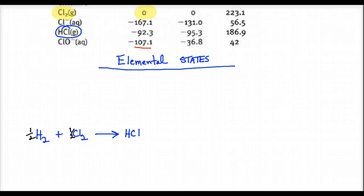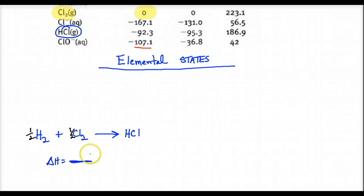Remember, delta H is not Q. Q is a pathway, so delta H has to have a firm starting position in its information. Kilojoules per mole tells me a firm position in my state — kilojoules alone is just heat, but kilojoules per mole ties it to a fixed position for this state function.